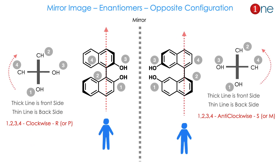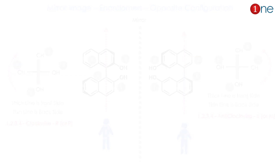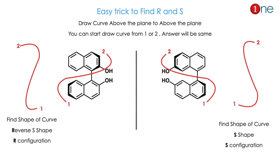Like any other chiral carbon, the mirror image always has the opposite configuration — they are enantiomers. For the left-hand side molecule, viewing between OH and CH on the front, arranging 1-2-3-4 gives a clockwise direction, so it is R. The right-hand side mirror image molecule has CH on top, OH on the bottom, and the arrangement gives an anti-clockwise direction, so it is S. Mirror images always have opposite configurations.